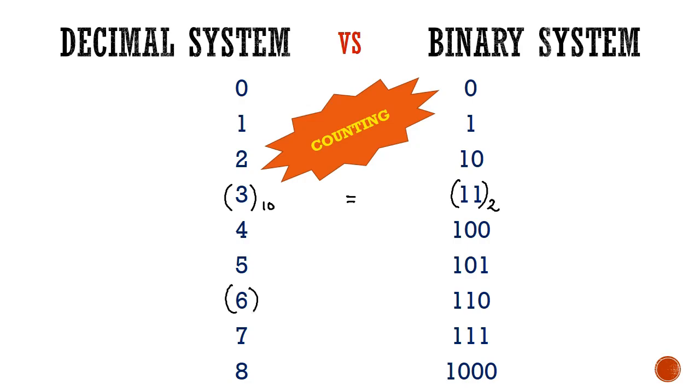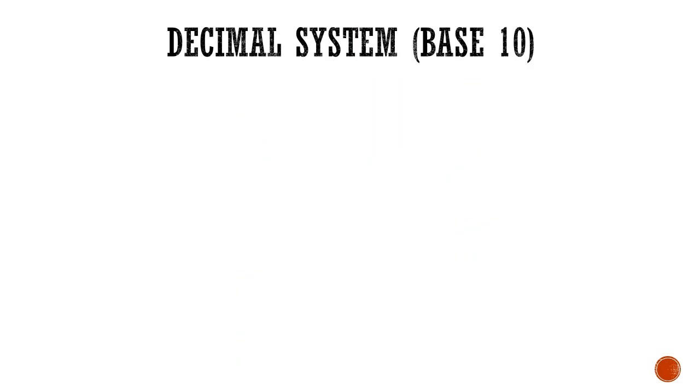Similarly, 6 in decimals is equal to 1 1 0 and so on. And 8 in decimals is equal to 1 0 0 0 and so on. Let's see how the numbers are expressed in both the systems starting with decimal system.